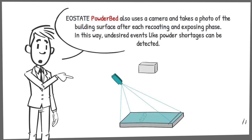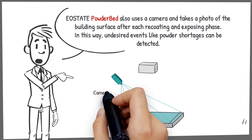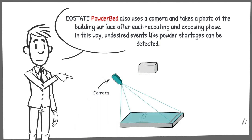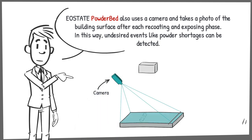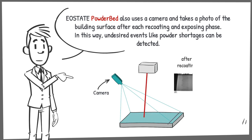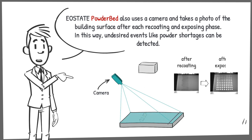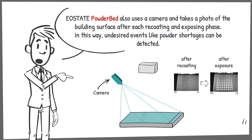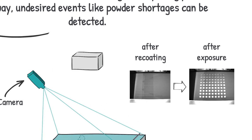e-ESTATE Powder Bed also uses a camera and takes a photo of the building surface after each recoating and exposing phase. In this way, undesired events — for example, powder shortages — can be detected.